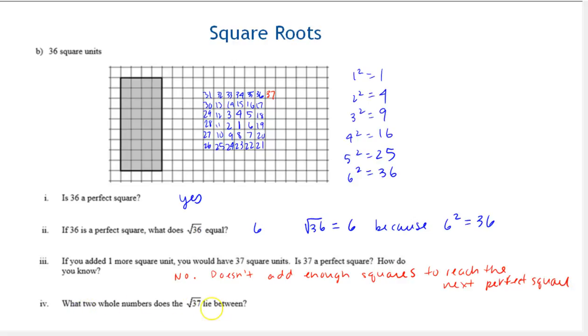And then we're asked, what two whole numbers does the square root of 37 lie between? Well, we know it's a little bit more than the square root of 36. So I'm going to use some inequality symbols. And the next perfect square would be 7 squared, which is 49. So that means the square root of 37 lies between 6 and 7. So 6 is less than the square root of 37, which is less than 7. So between 6 and 7.